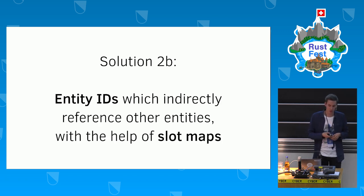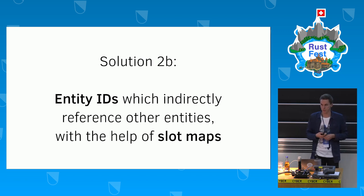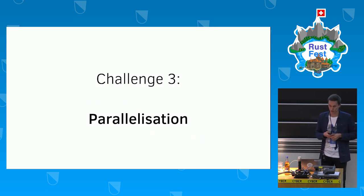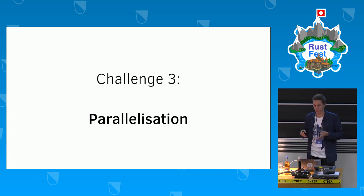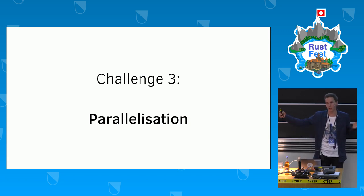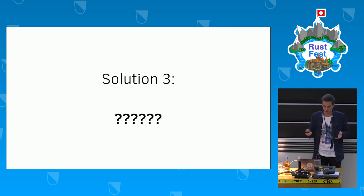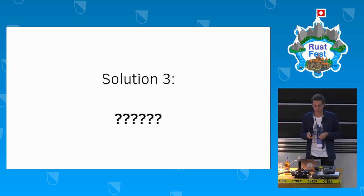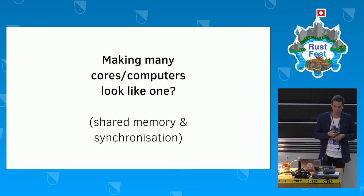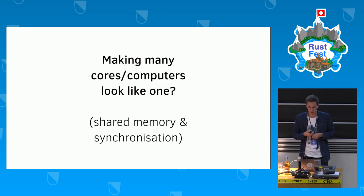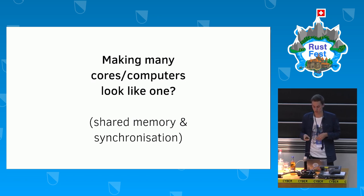The toughest challenge was parallelization — one core wouldn't be enough, and maybe not even one computer for really large cities. The traditional approach of shared memory and synchronization is inherently unsafe and tricky; Rust helps, but at the scale of millions of tiny entities synchronized in real time it stops being feasible.